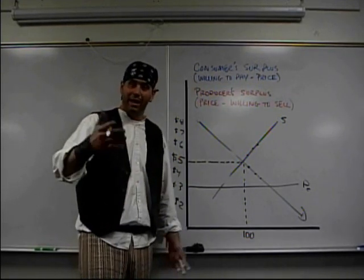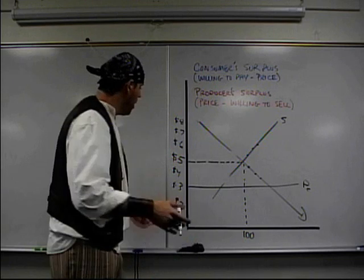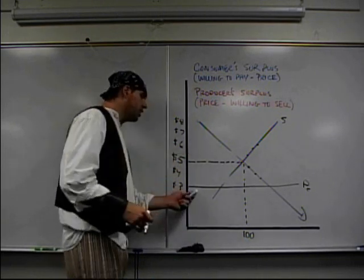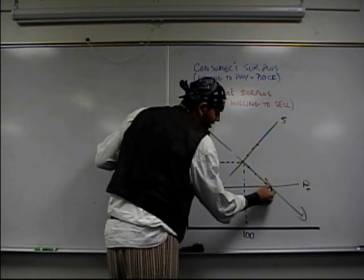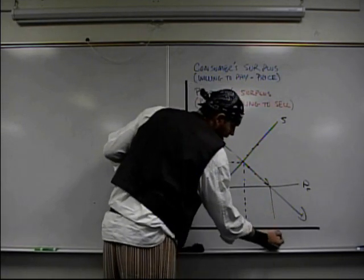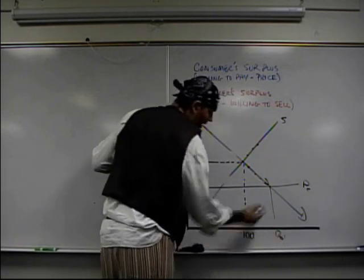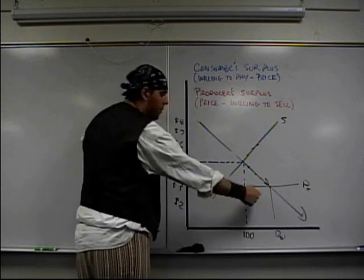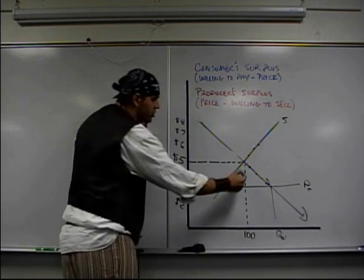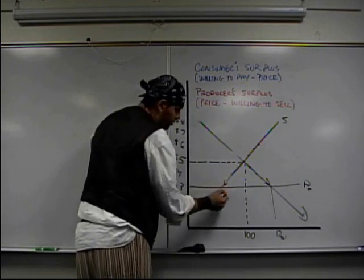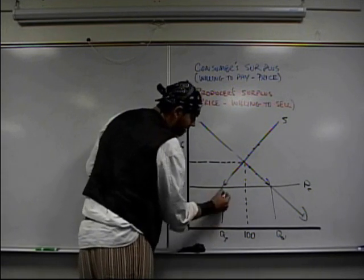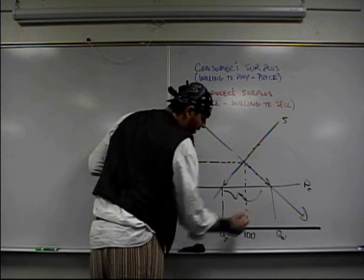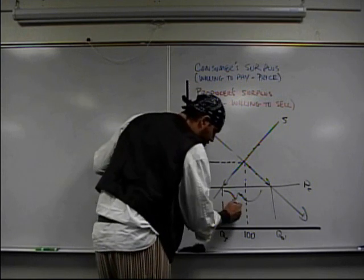It's a bad idea and here's why. When the price is really low, the quantity demanded increases — more consumers want to buy more. But when the price is low, producers don't want to produce it, so quantity supplied decreases. And as you already know from the other videos, we have a shortage.